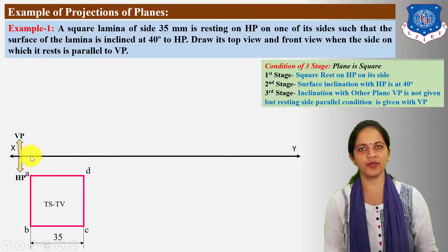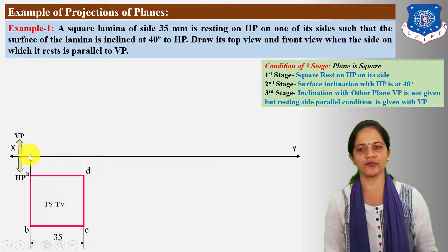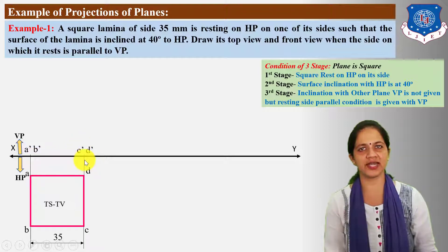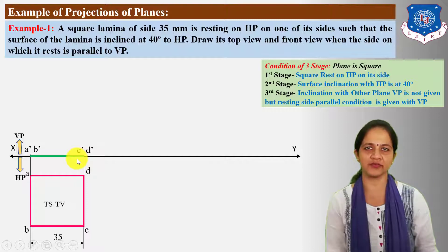Mark the corner points of the square as A, B, C, and D. The front view of the first stage is always a straight line because the plane rests on HP, and this line will be projected on the XY line. Take upward projections from corner points A, B, C, D up to the XY line and mark the elevation points A', B', C', D' in the form of a line, indicating the first stage front view.